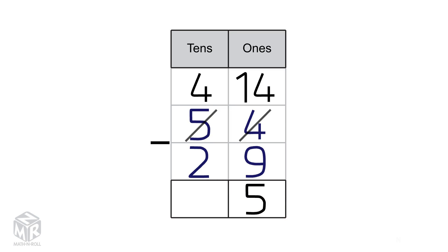Next, we subtract the 10s: 4 minus 2 equals 2. So 54 minus 29 equals 25.